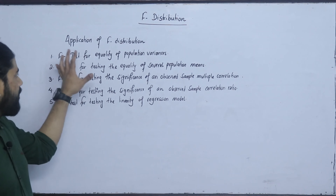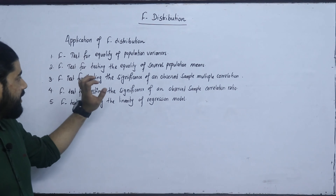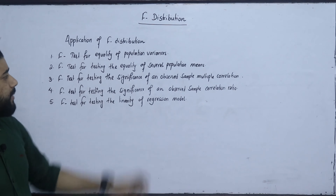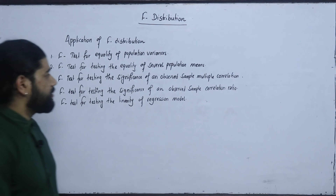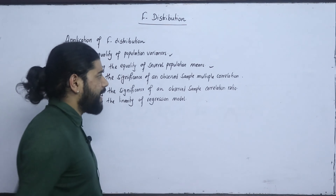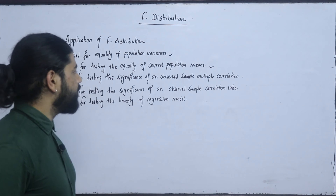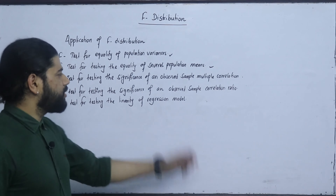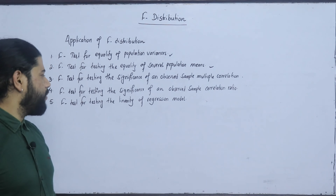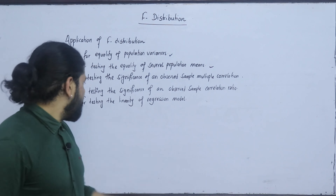The first part is F-test for equality of population variance. This ANOVA test is normally a variance test. It also covers the significance of observed sample multiple correlation, observed sample correlation ratio, and regression model linearity.